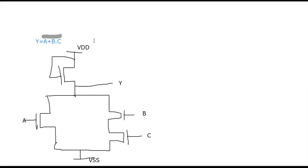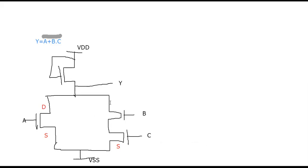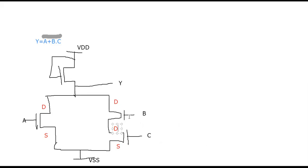Now let us identify the terminals. For the A transistor, this will be the source — as you know about the source. This will also be a source. The output side will be the drain, because output should always connect to drain. For the B and C transistors, this side will be drain and this side will be source.